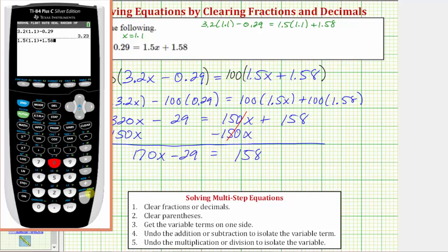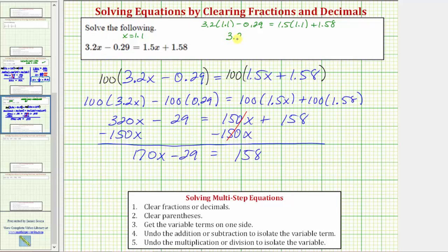and notice how we do get 3.23 on the right side as well. So because 3.23 is equal to 3.23, our solution is correct. I hope you found this helpful.